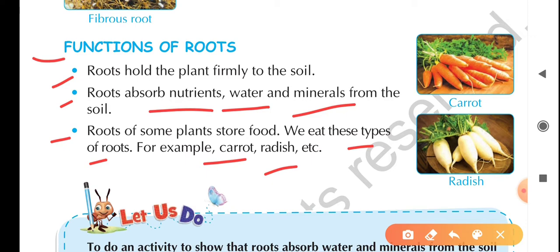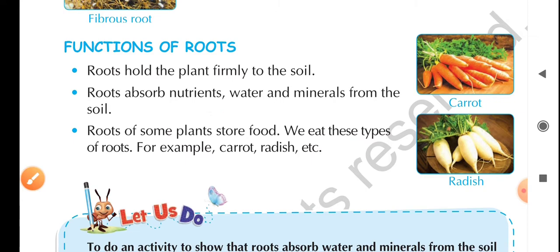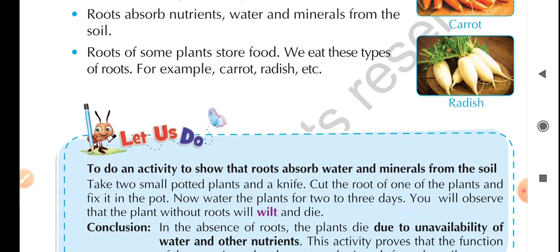Roots of some plants store food, and we eat these types of roots. For example, carrot and radish. These are called storage roots. Carrot and radish are examples of the plant's root parts that store food and are consumed by us.